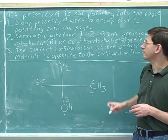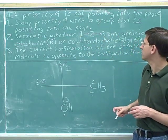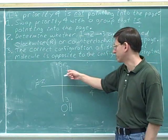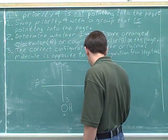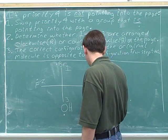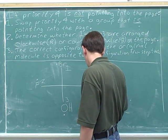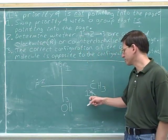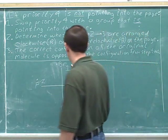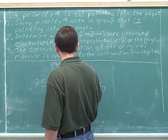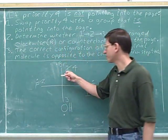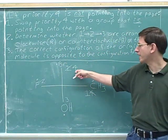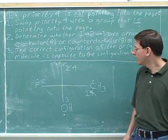Step one: swap the priority four with a group that is pointing into the page. Let's swap the number four and the number one priorities. So where the number four priority used to be, we're going to put the number one. And where the number one priority used to be, we put the number four. Now the number four is pointing away from us.